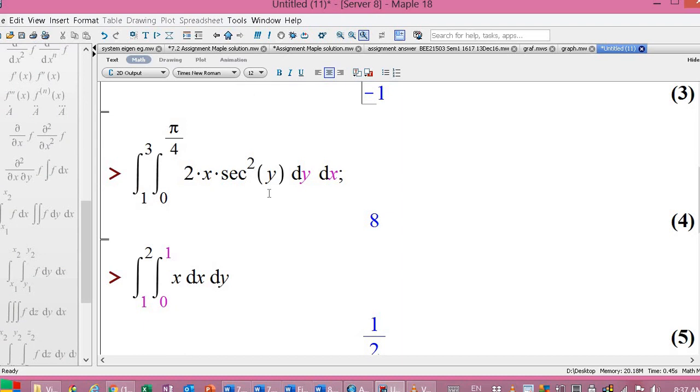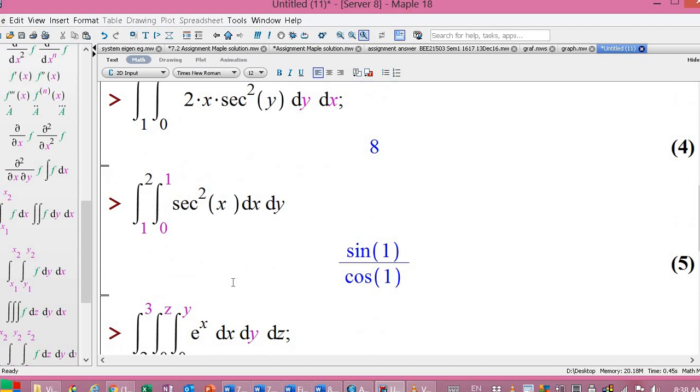2x secant squared y dy dx. So 2 times 2x. Make sure you multiply using the pressing the command shift x. It gets a dot. It stands for the multiplication. So this one again, shift x secant. As you see, the square. How you type the square. For example, you want here secant. You want square, shift 6. So secant squared x. Open, close.